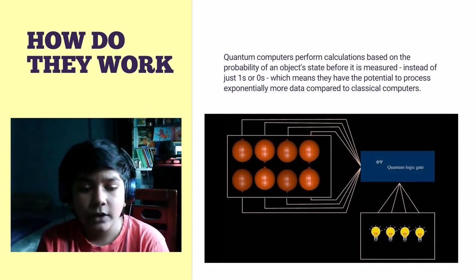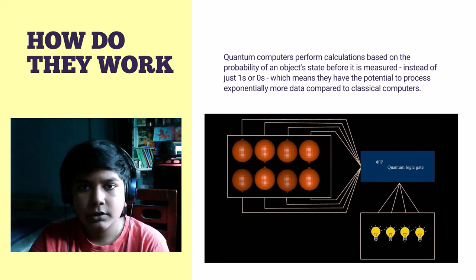Quantum computers perform calculations based on the probability of an object's state before it is measured. So it predicts what you're gonna do, so that can make the computer faster.